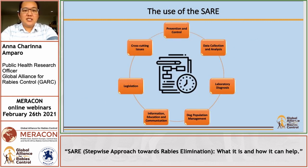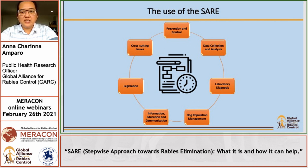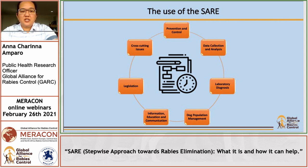The activities outlined in SARA are grouped into different categories or components, and all of these fit into the five pillars mentioned earlier in the global framework of rabies elimination. So we have prevention and control, data collection and analysis, laboratory diagnosis, dog population management, information education and communication, legislation, and cross-cutting issues.